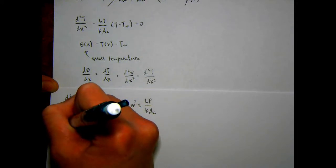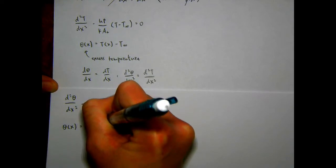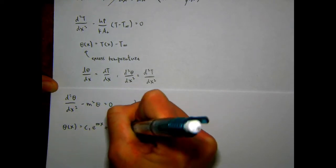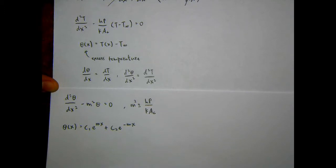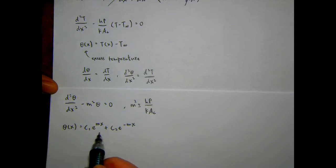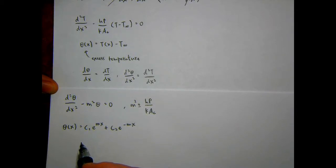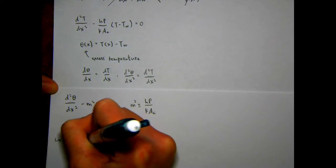The general solution to this type of differential equation is θ(x) = C₁e^(mx) + C₂e^(-mx). You can verify this by taking the derivative and checking it satisfies the equation. Since it's second-order, we have two constants, meaning we need two boundary conditions to find the particular solution.